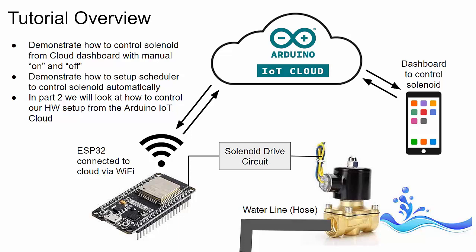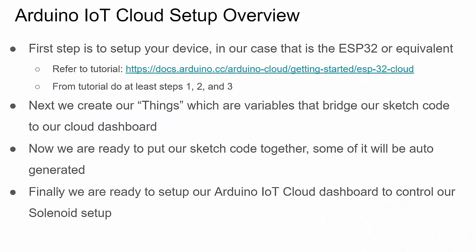Here's a slide I showed in part one. Our whole setup includes our ESP32 board which is the brains behind it — it can connect to the Arduino IoT cloud where we set up a dashboard to control the ESP32. With the right solenoid drive circuit set up in part one, we can control the solenoid, essentially turning a water, gas, or oil line on or off. In part two we'll focus on setting up the IoT cloud, the code, and creating the dashboard.